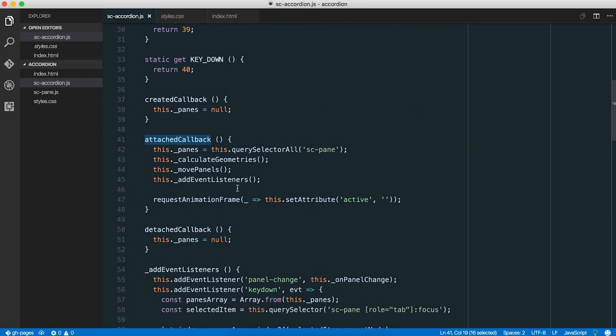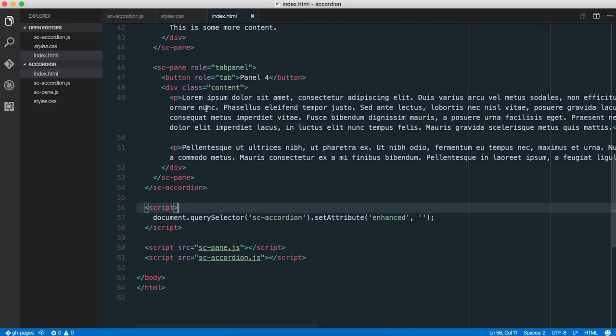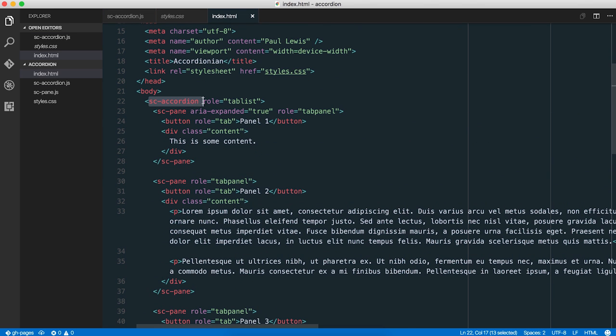But there are main things that we can dive into and actually have a proper look at. And the main thing that I think we'll start with is the attached callback. We're using custom elements here for the accordion and the panes. You can see that, actually, in the HTML. Let's have a look there quickly. There's the accordion. Ta-da! And then each of those panes is in there with the header button and the content itself.